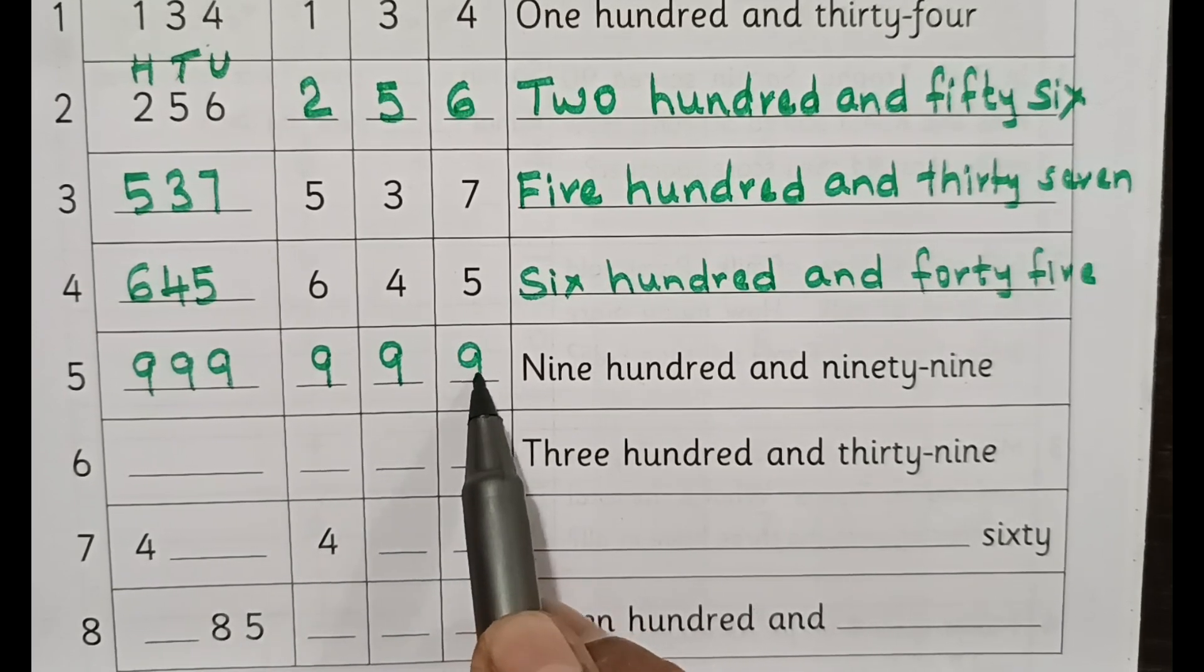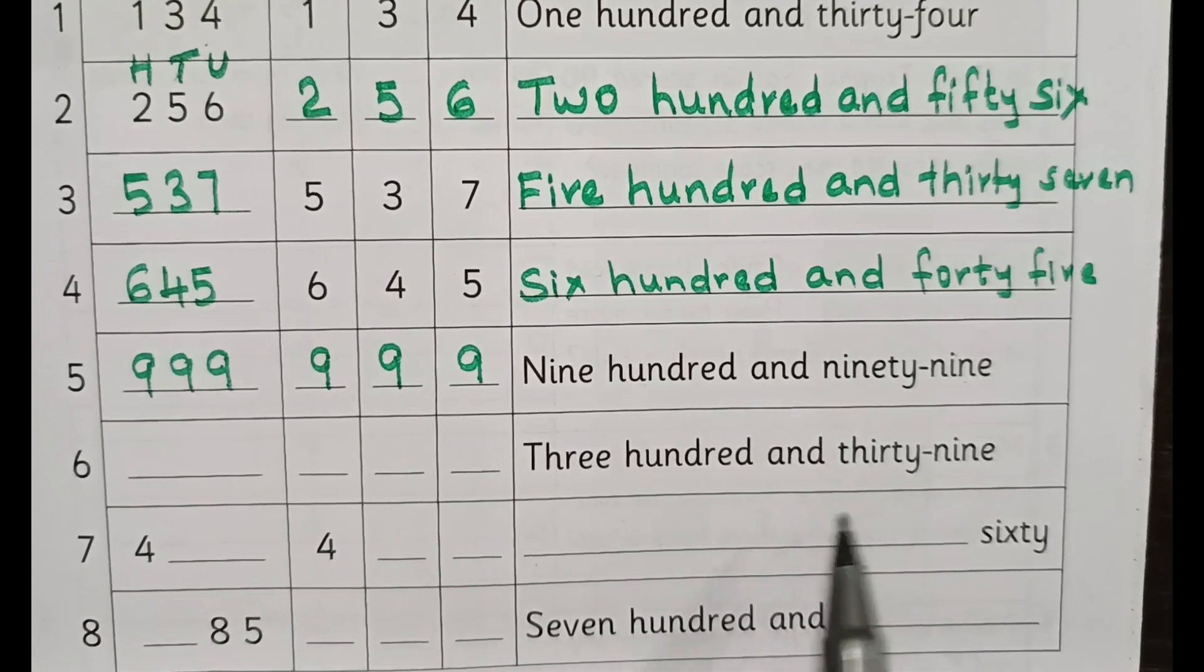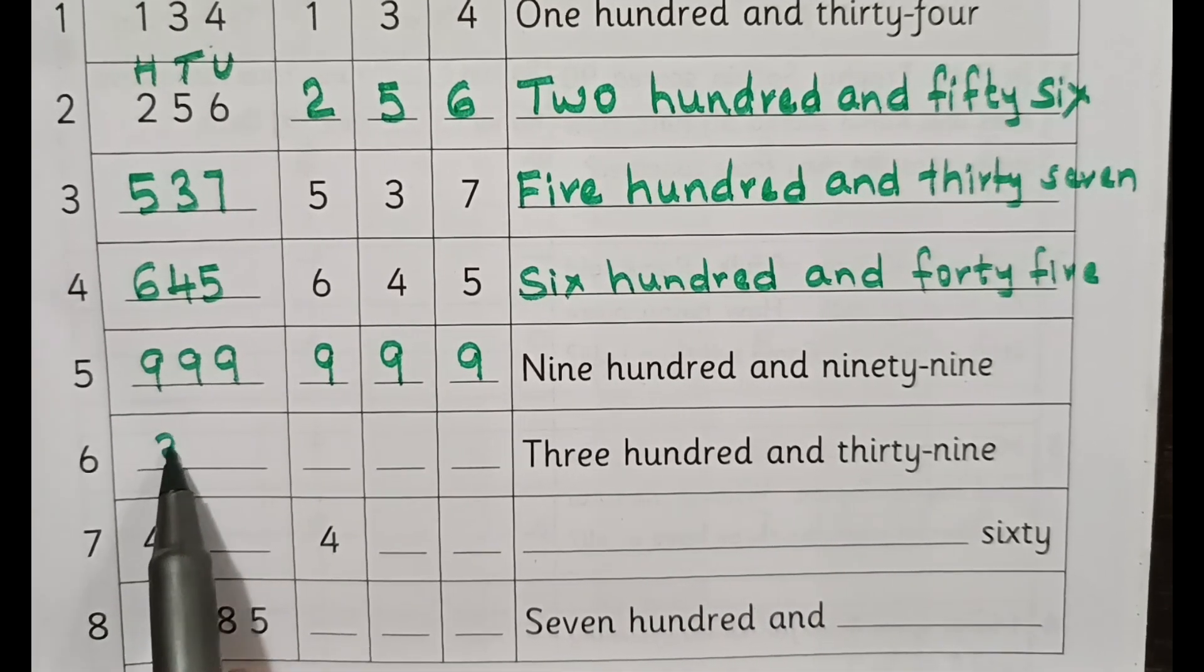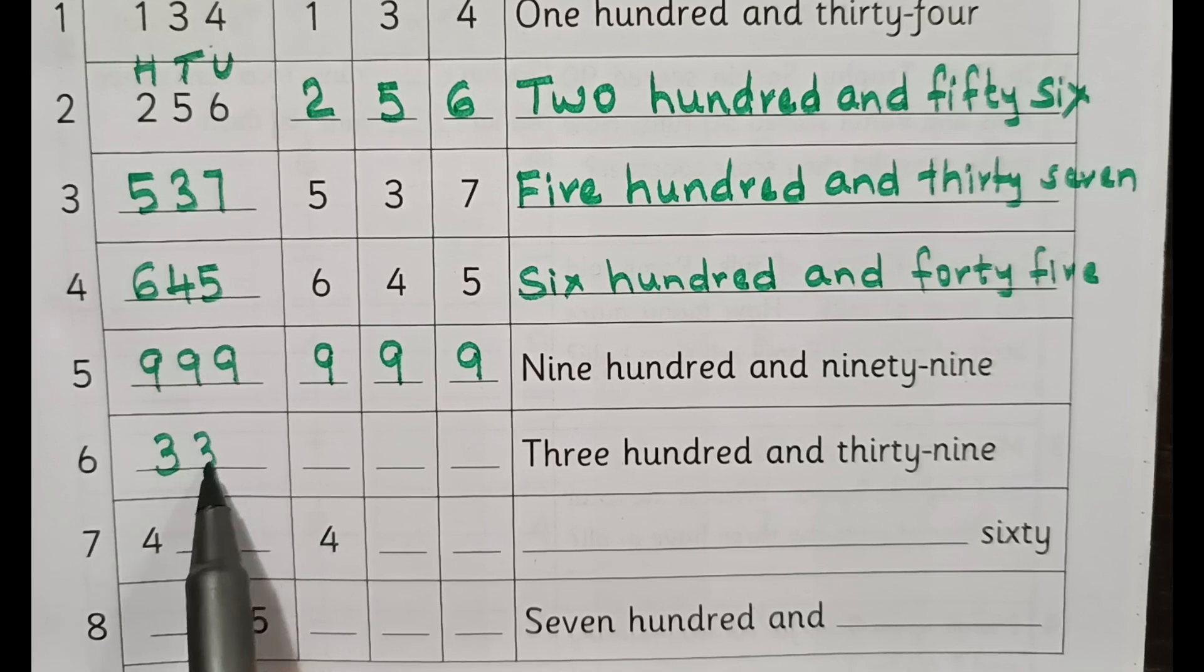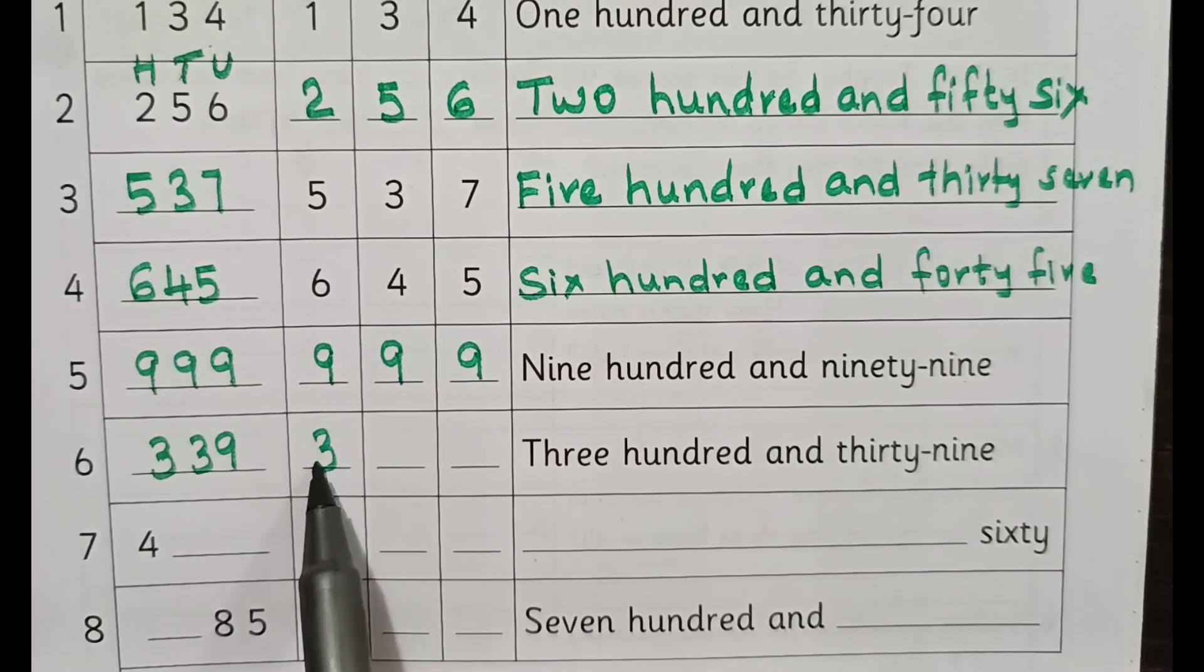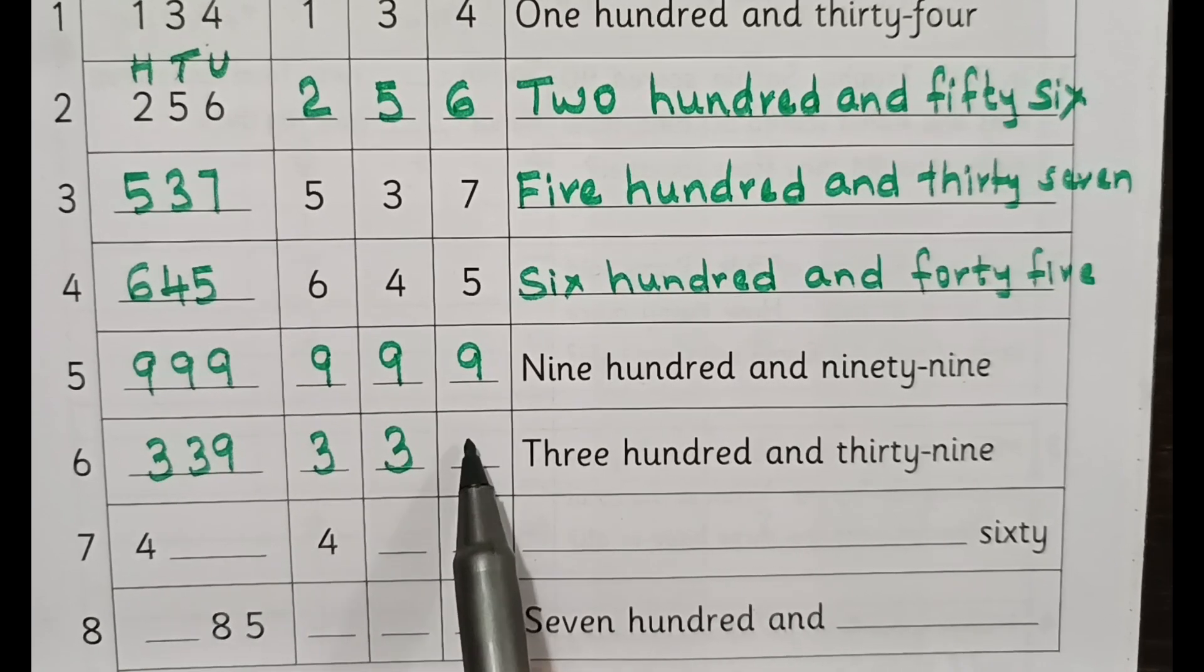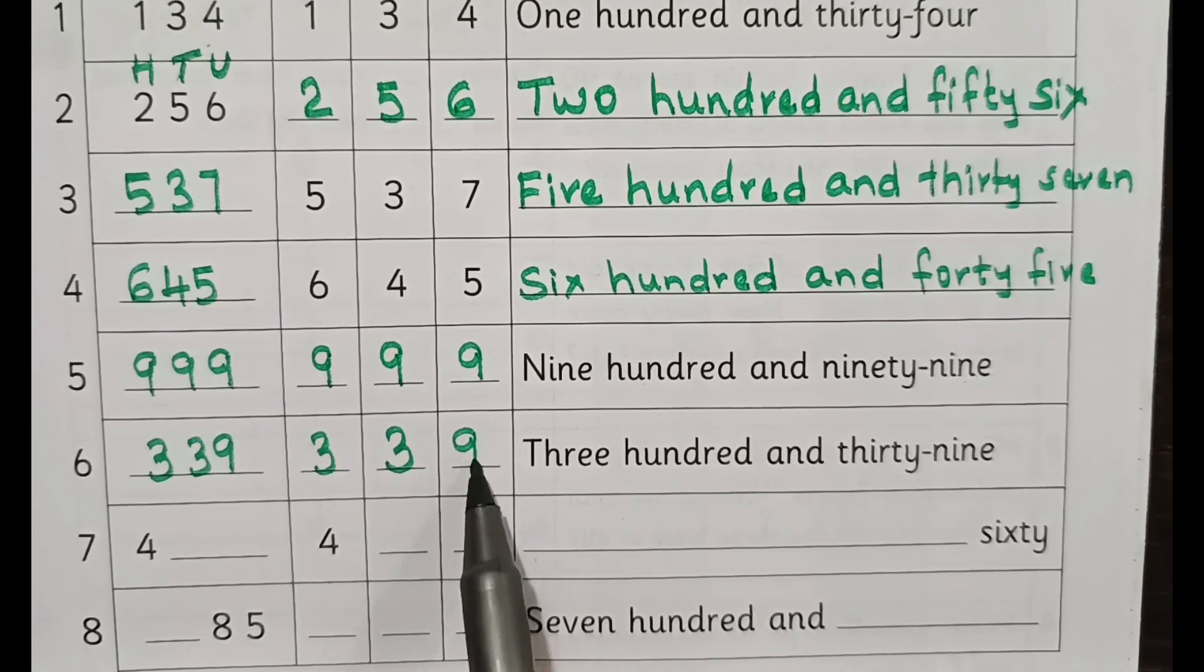Nine units are there. Three hundred and thirty-nine. Three hundred and thirty-nine. In this number, three hundreds, three tens and nine units.